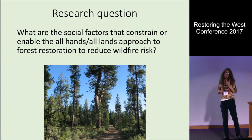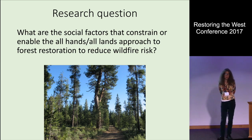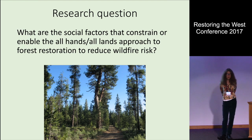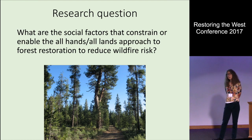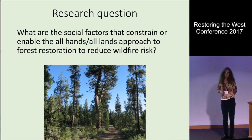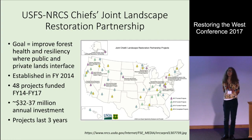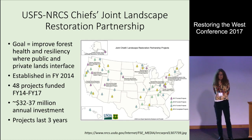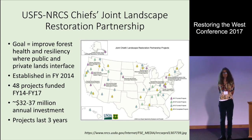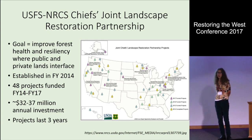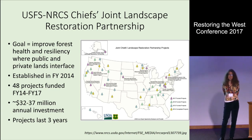The research question we've been asking is: what are the social factors that constrain or enable the all-hands, all-lands approach to forest restoration, specifically to reduce wildfire risk? We've asked this question in the context of the Joint Chiefs Landscape Restoration Partnership projects specifically. We've studied four of these projects to date, and I'm going to talk about three of them today. This year we're going to be adding three or four additional projects to expand our sample size.